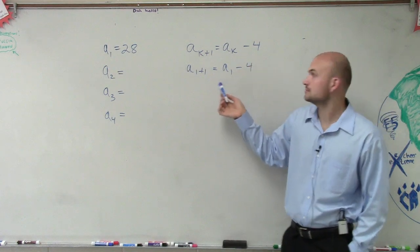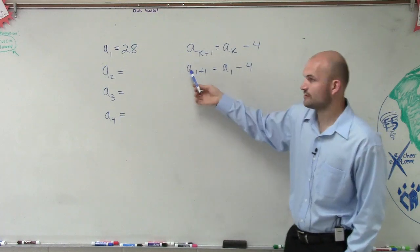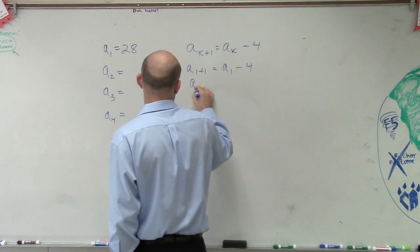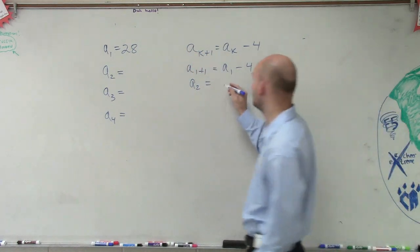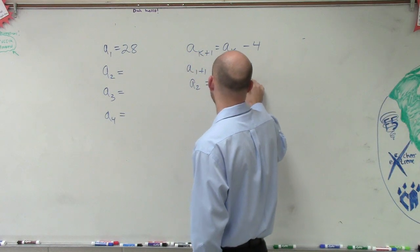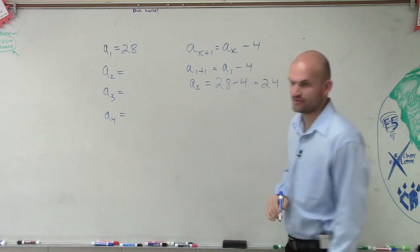Now, do we know what A sub 1 is? It's 28, right? So therefore, A sub 1 plus 1 is A sub 2. So what that means is A sub 2 equals A sub 1, which is 28 minus 4, which equals 24.